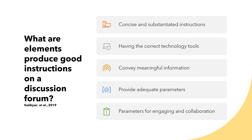So what are the elements that produce good instructions on a discussion forum? According to Gillian 2023, they are concise and substantiated instructions — clear, concise, and to the point — and they clearly dictate what is required of the student. You need to have good technology tools; there are certain key technology tools that are adequate and should be supported for discussion forums.